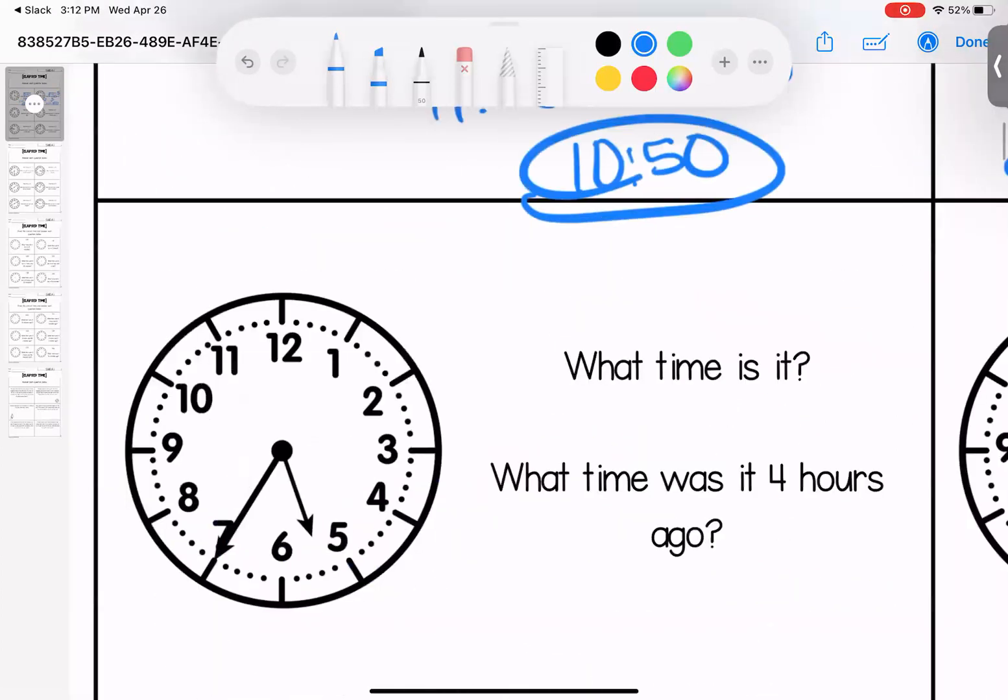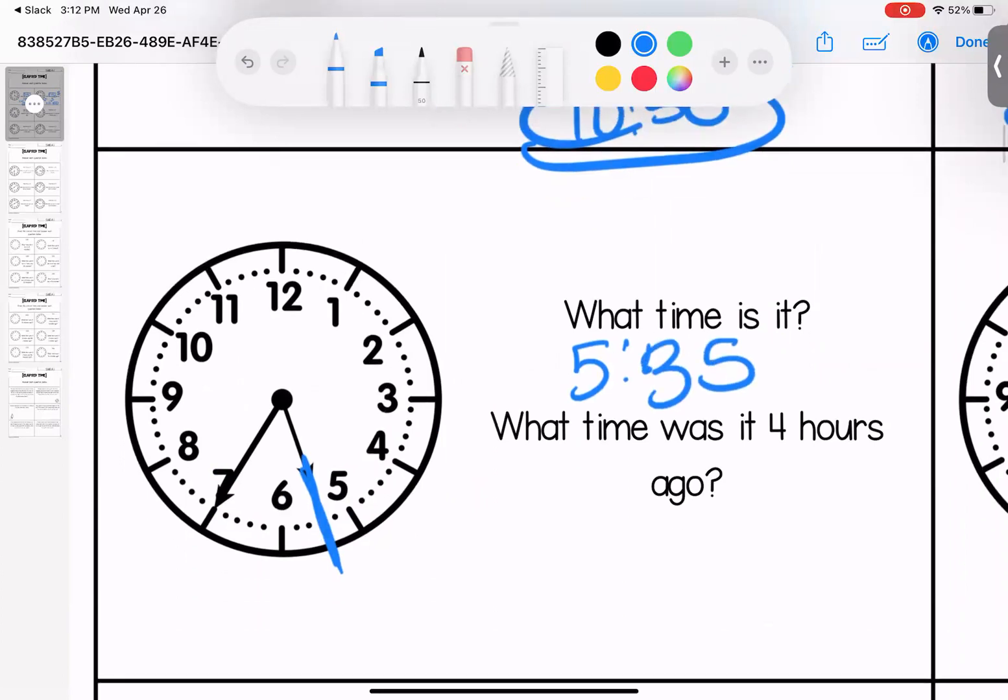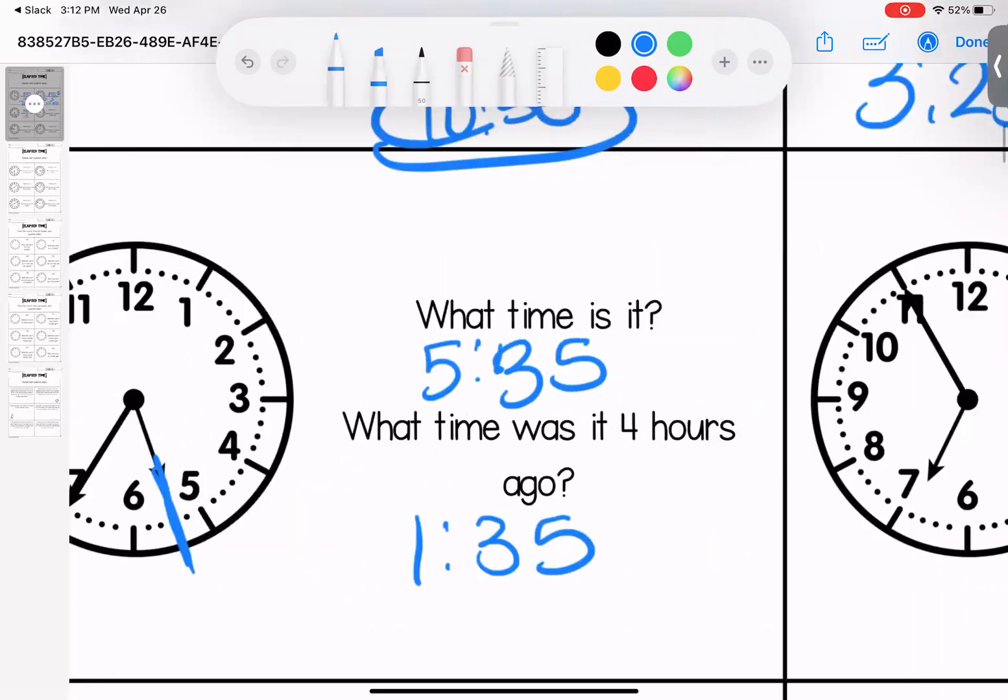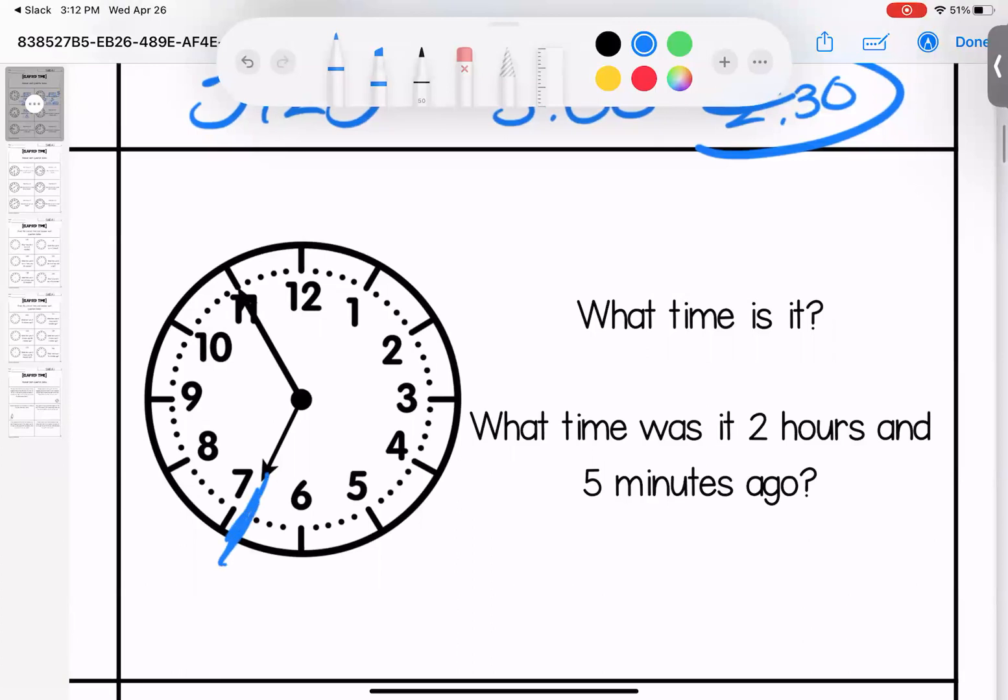What time is it? It is 5:35. What time was it four hours ago? 1:35, just subtracting the hour on that one. What time is it? 6:55. What time was two hours and five minutes ago? Two hours, 6:55 to 4:55. Take off another five minutes is 4:50.